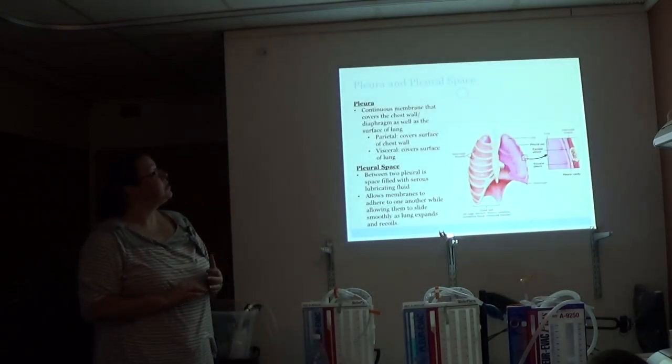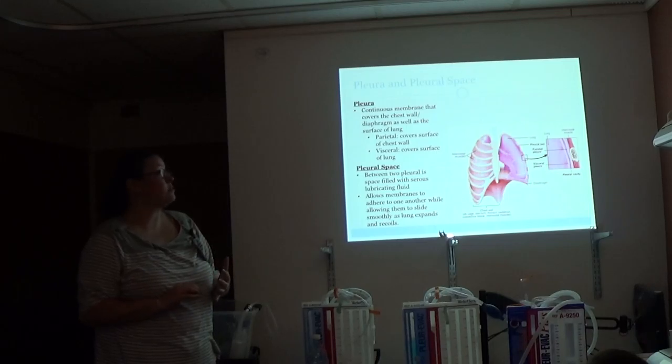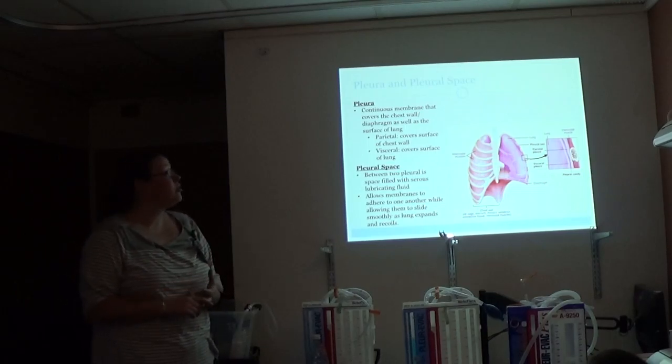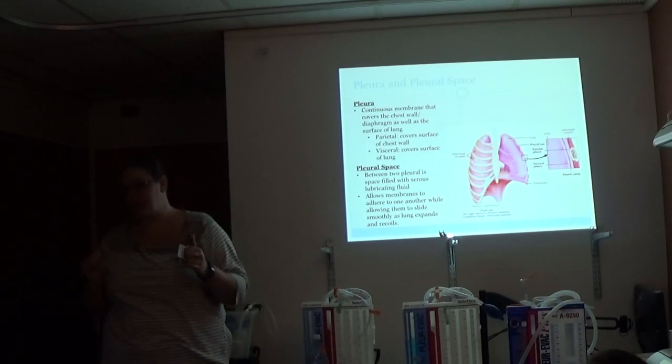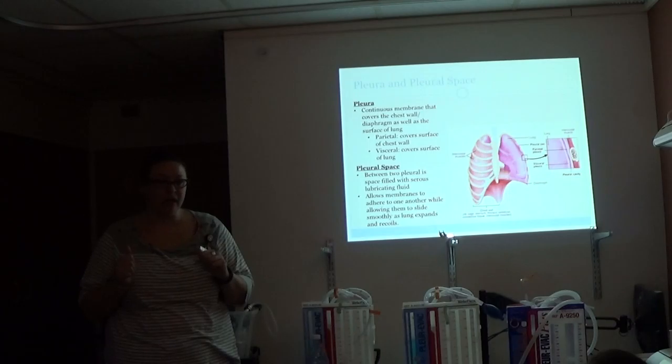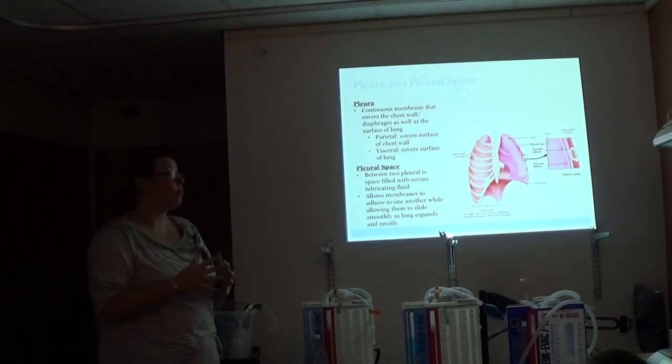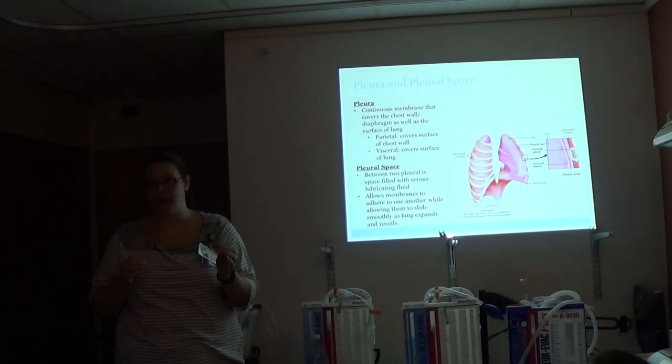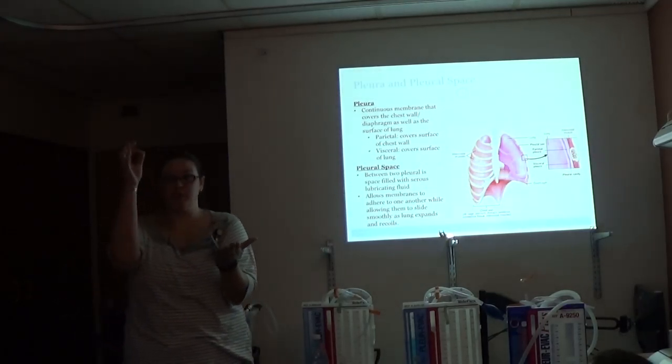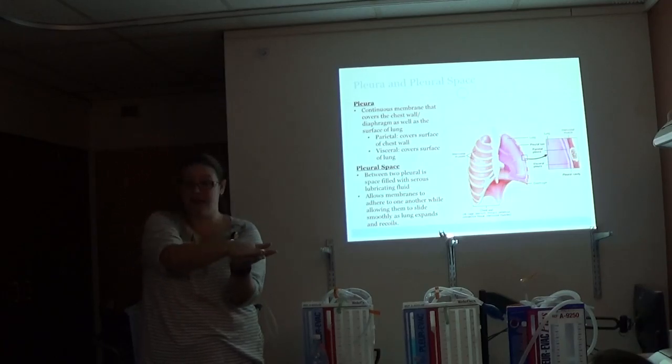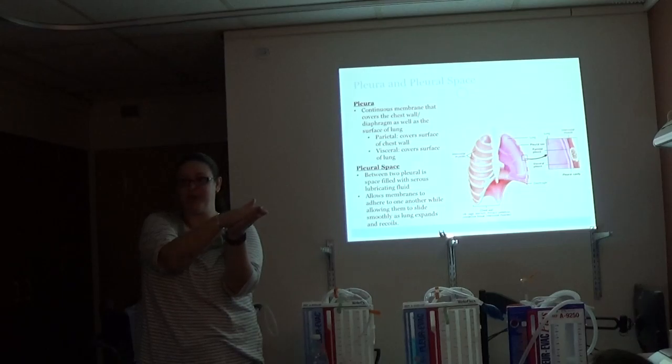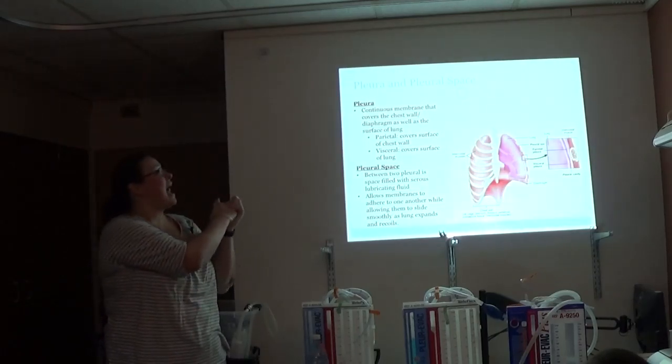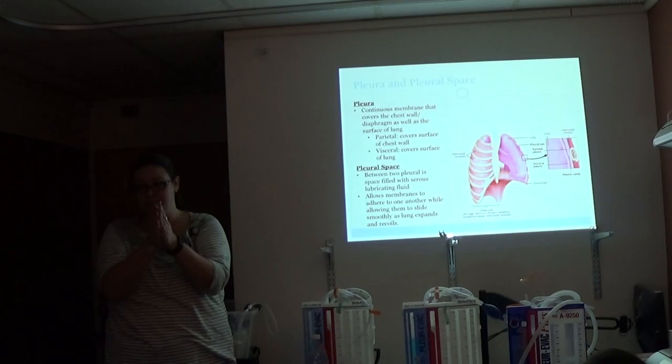So the pleura and the pleural space. The continuous membrane covers the chest wall and diaphragm as well as the surface of the lung. So you've got your parietal on the underside of your ribcage and then your visceral, which is over the lung, and then the pleural space is between, is filled with this serous lubricating fluid. So it's this yellow fluid, everybody has it, it's between 50 and 100 mLs at a time. It allows your membranes to adhere to one another while sliding smoothly. If you think about back to microbiology when you were making slides, you take a slide, you put a drop of water on top, and you stick another slide on top of it. They slide against each other really easily, but it's really difficult to pull them apart. It's the same process with your lungs. So you need a chest tube when something happens in the pleural space to disrupt that adhesion.